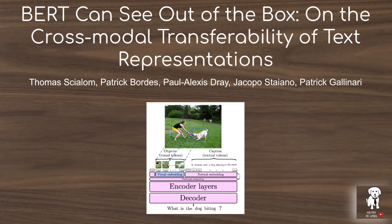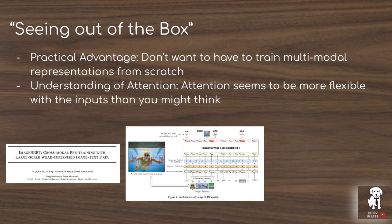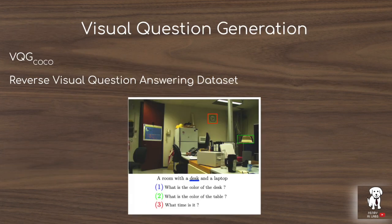This video will explore the paper 'BERT Can See Out of the Box.' This study looks at how well BERT can attend to pre-trained visual embeddings and their text captions without much fine-tuning, in order to ask questions about the text-image pair — a task known as visual question generation.